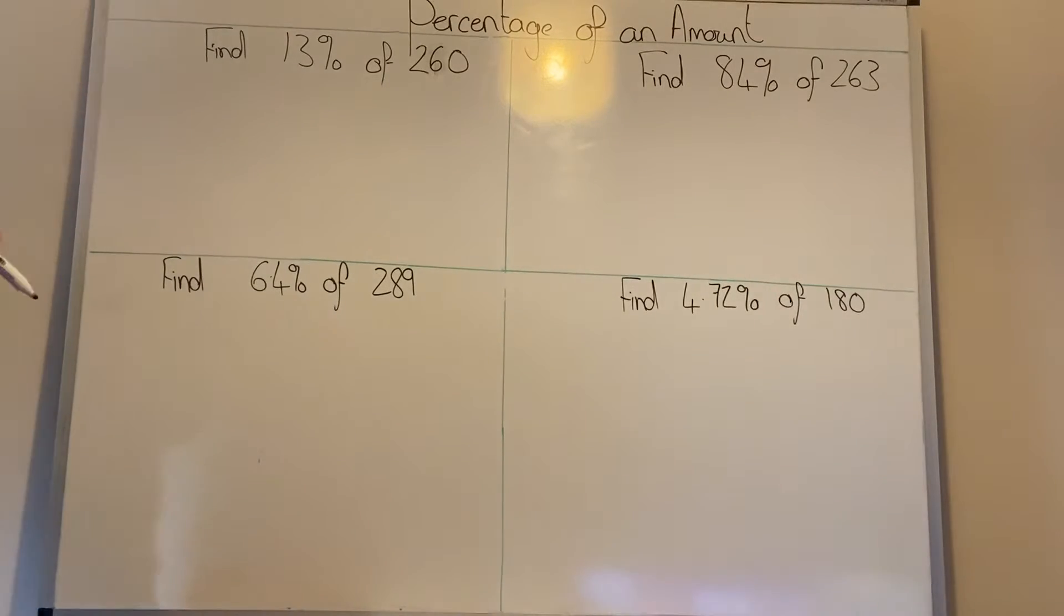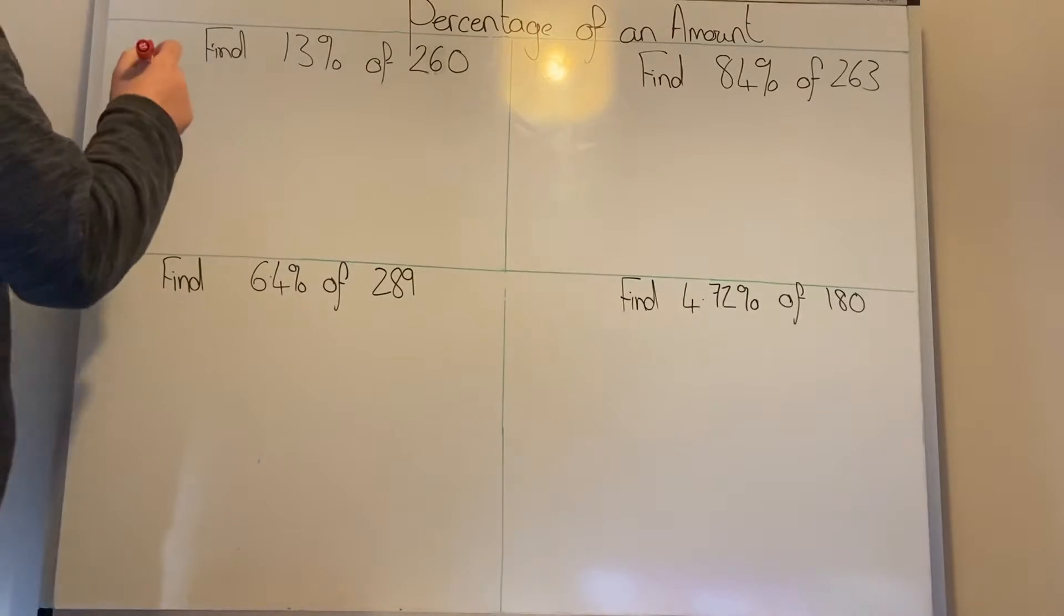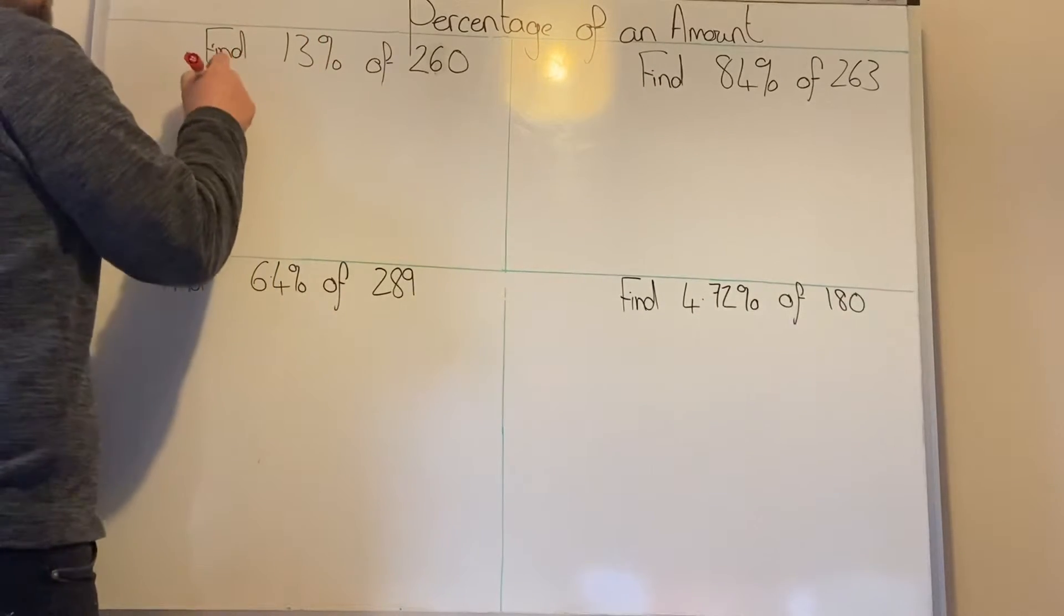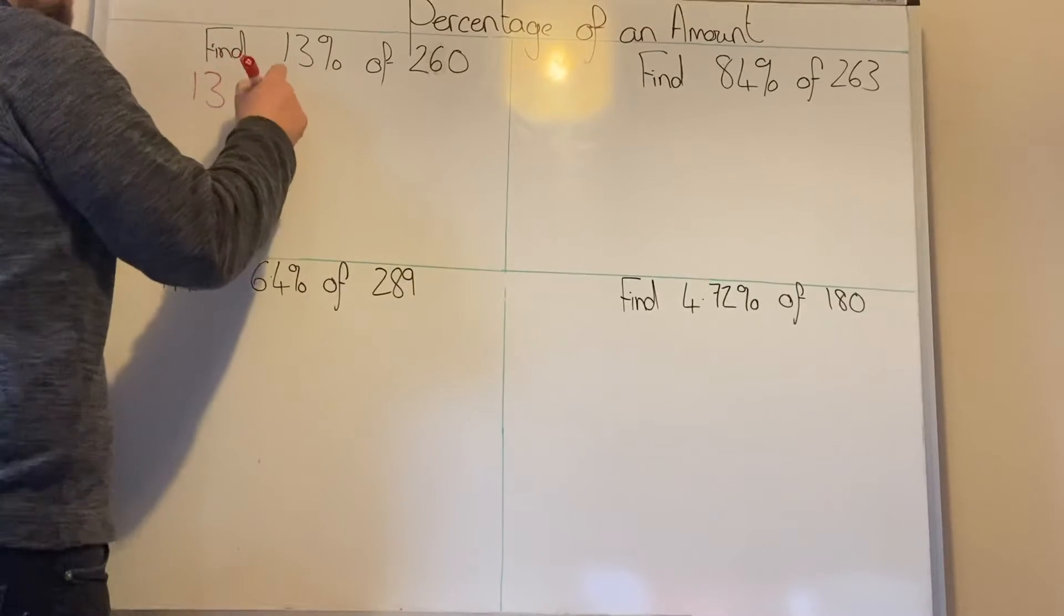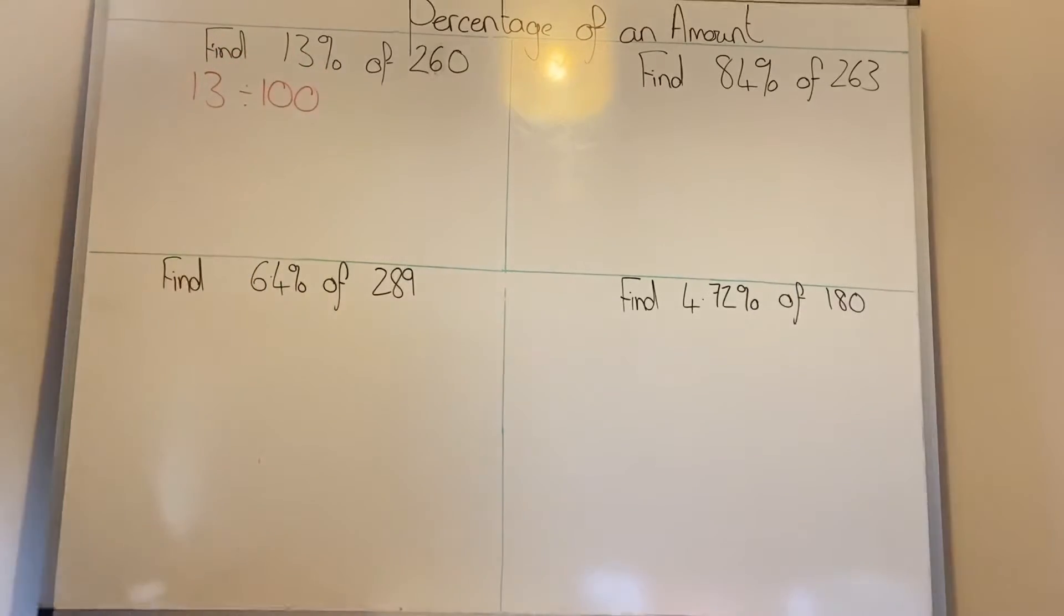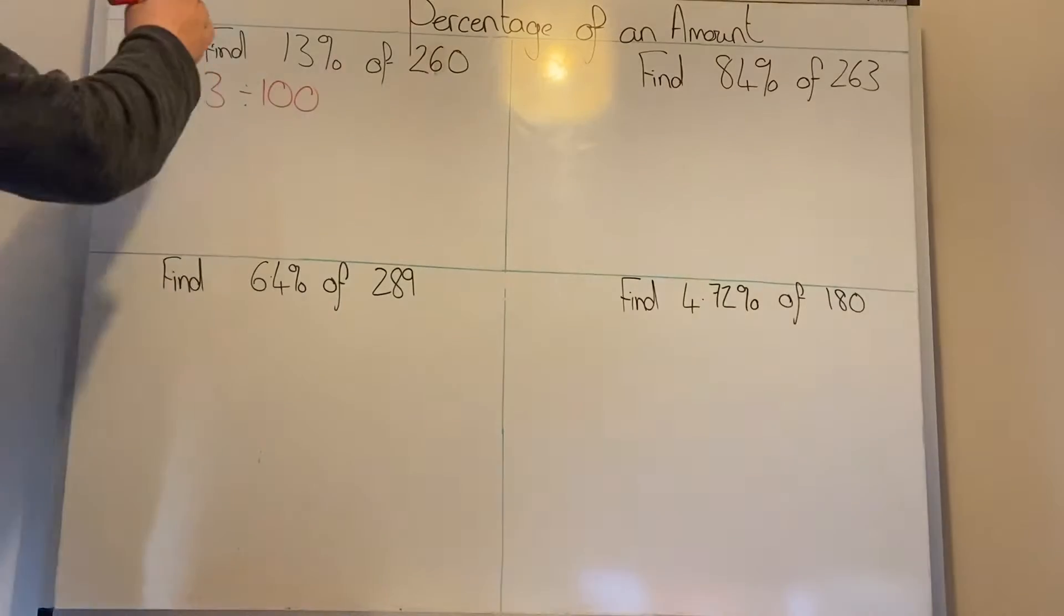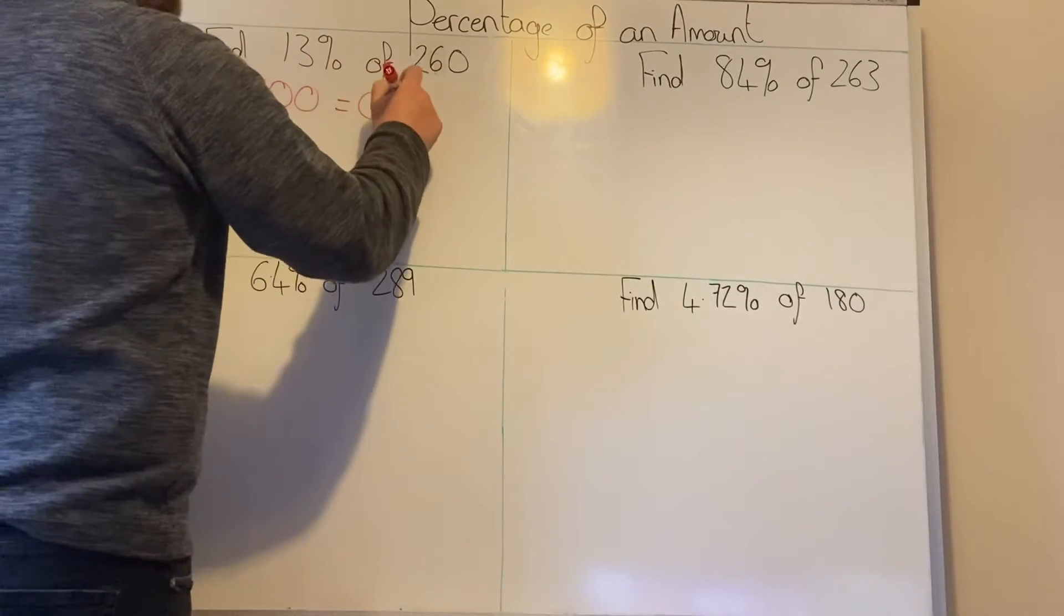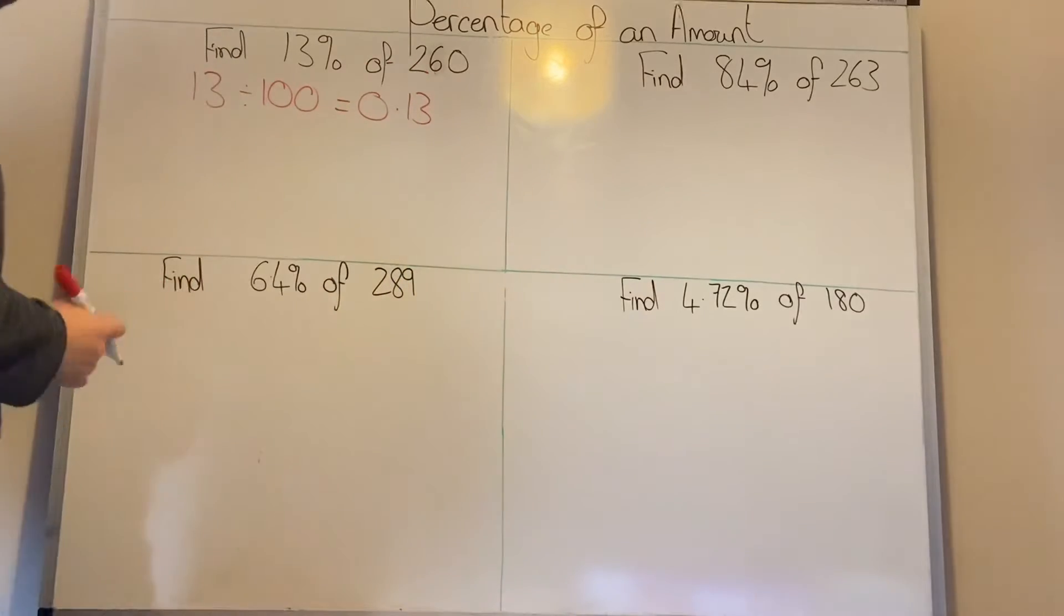First question: find 13% of 260. The first thing you need to do is divide 13 by 100. Divide your percentage by 100, and that equals 0.13. That's your multiplier.